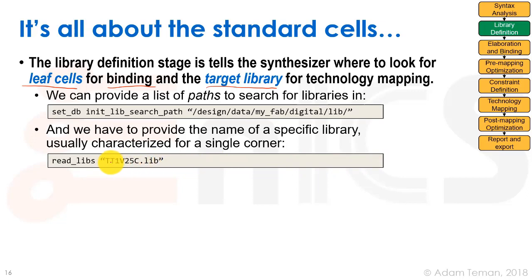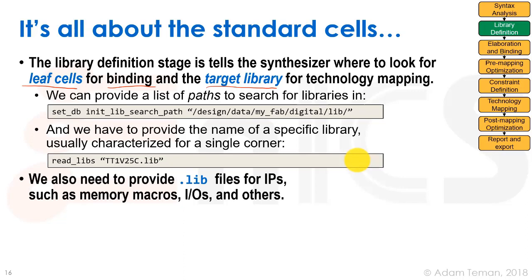We use the read_libs command and give it a list of all the liberty files we want to read. In this example, we're reading a file called tt1v25c — a very descriptive name. Each liberty file is for a certain set of operating conditions and process corners. 'tt' means typical-typical: the pMOS and nMOS were fabricated at their typical corner. '1v' means VDD is one volt, and '25c' means 25 degrees Celsius — the temperature that library was characterized for. We give the tool a list of all libraries at a certain process corner.